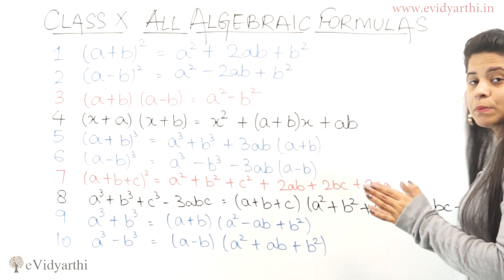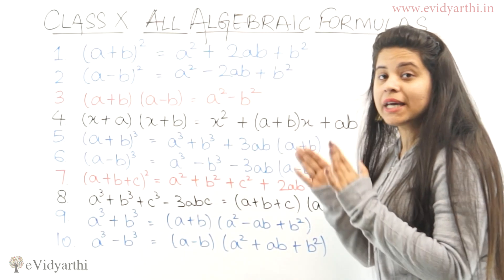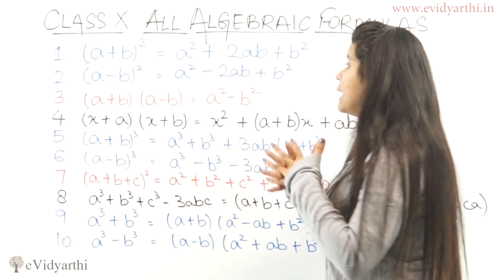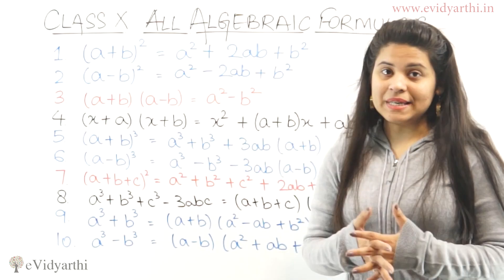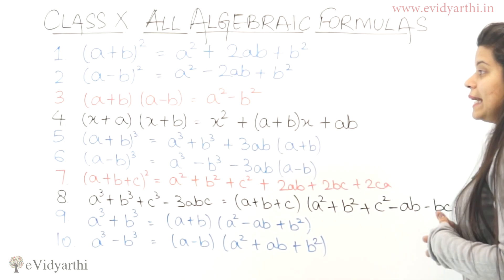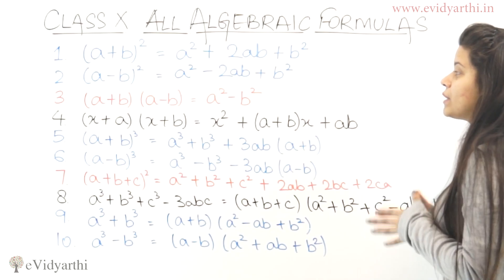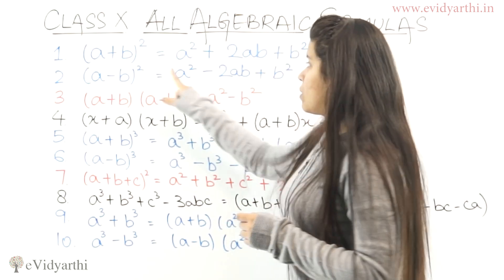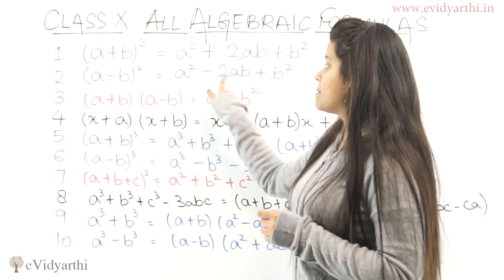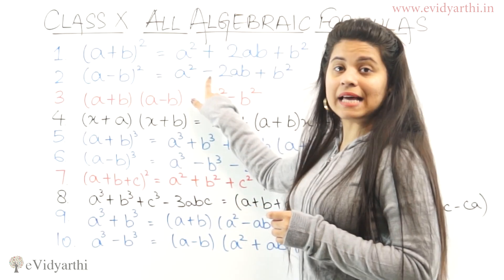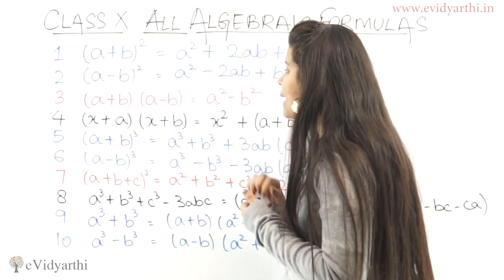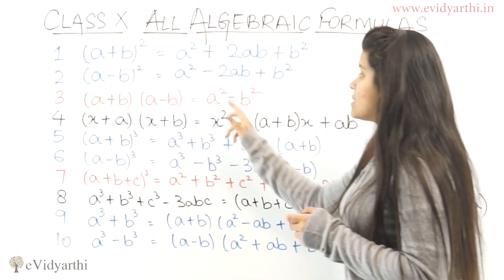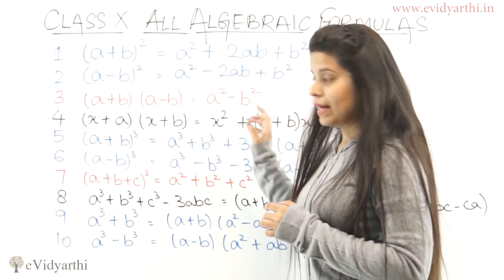The first formula, which is very simple: A plus B whole square equals A squared plus 2AB plus B squared. The second one is the same, just with minus 2AB instead. Then the third one is A plus B times A minus B, which equals A squared minus B squared.